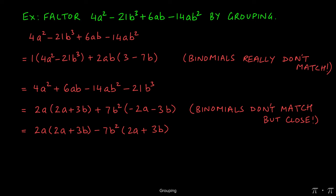Now we see that the binomials do indeed match. We do have 2a plus 3b being the same in both terms. We can factor that term out as the GCF, and then when we divide this first term by it, we get just 2a. And then when we divide this second large term by it, we're left with negative 7b squared.